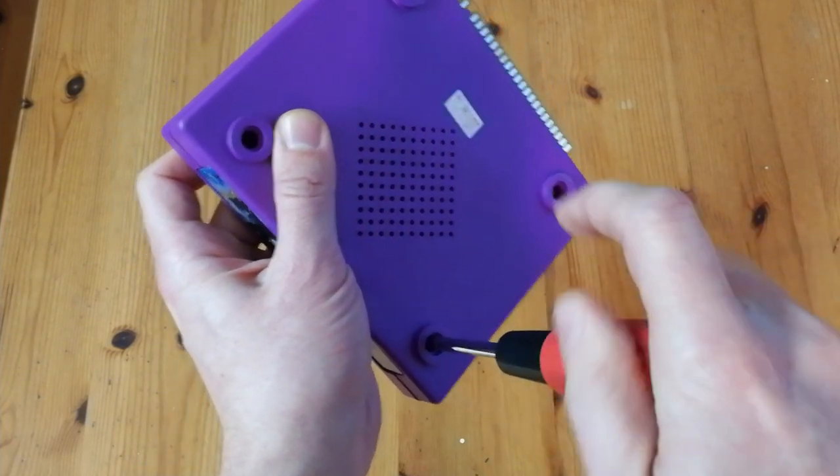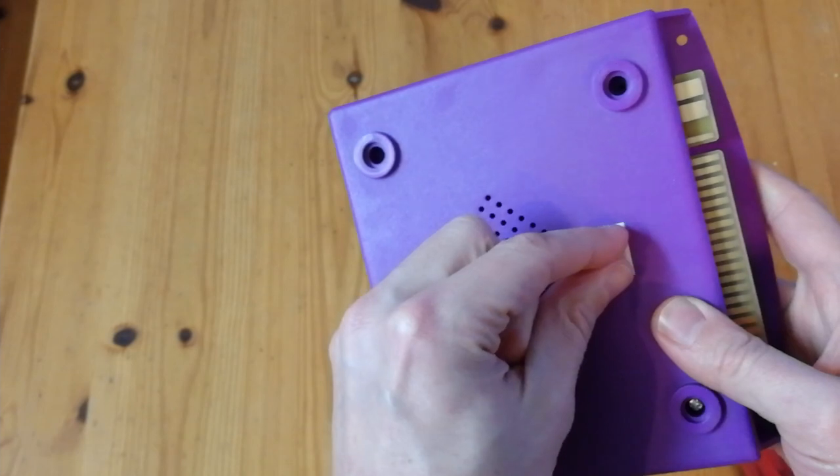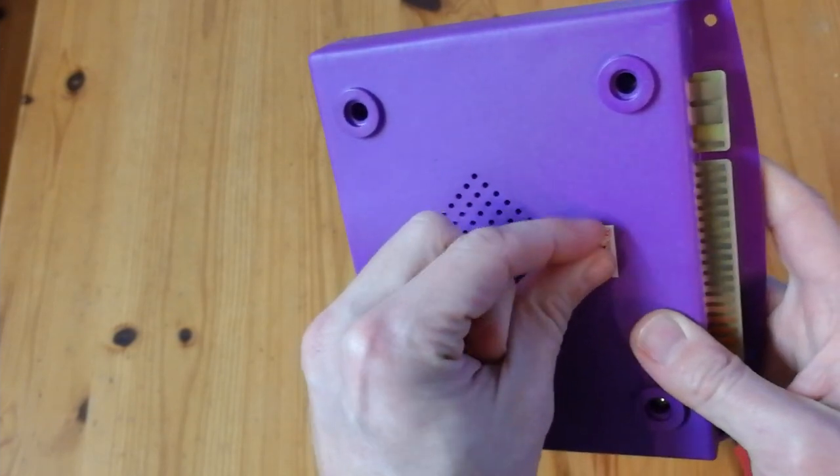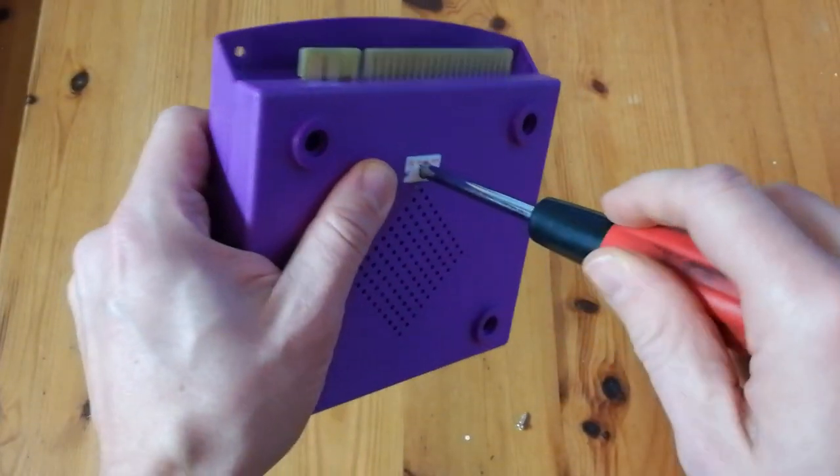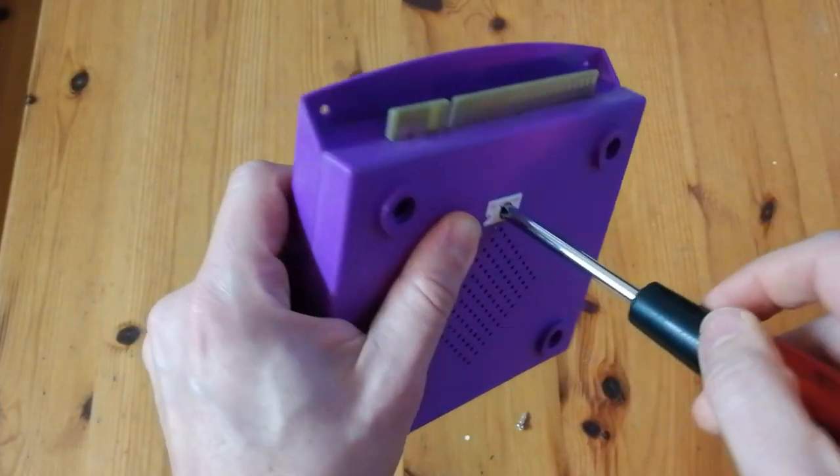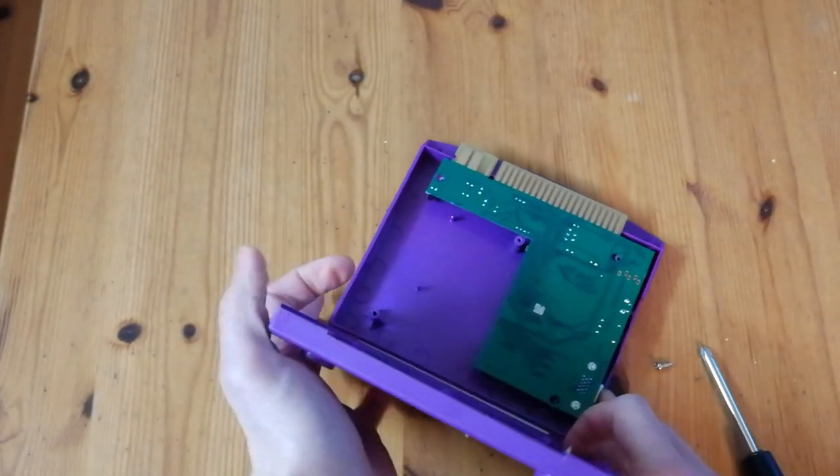Let's see what's inside this thing. It's held together by five screws. One is hidden underneath this sticker. You can either peel it off or let's stop it. Inside the lovely purple case, we get a green PCB.